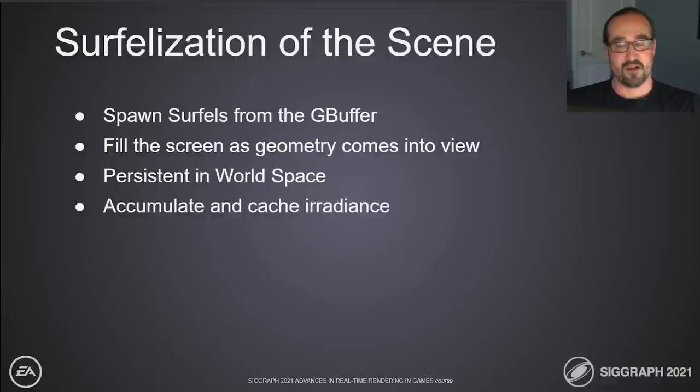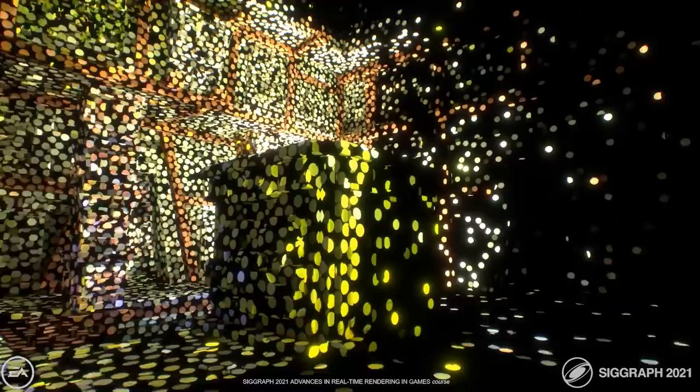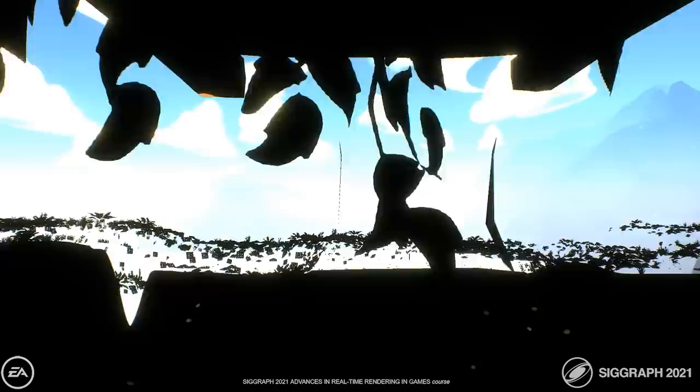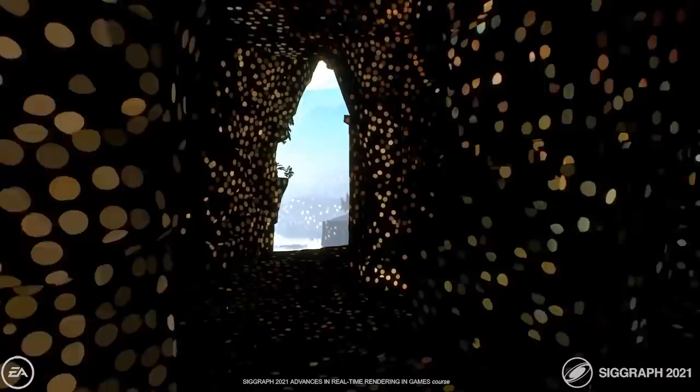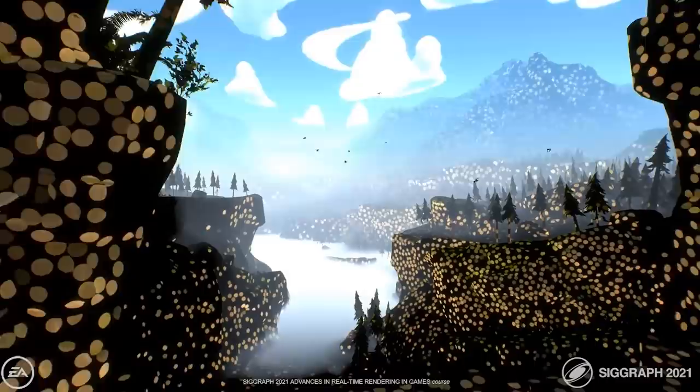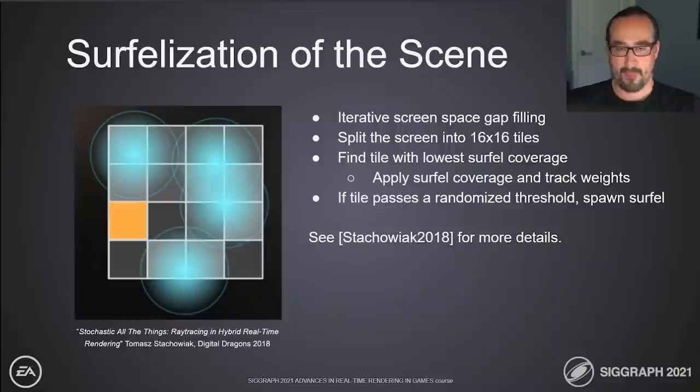How do we discretize the scene into surfels? In our case, we spawn them from the G-buffer as geometry comes into view. After that, surfels are persistent, which allows us to efficiently accumulate radiance over time and cache those costly operations without throwing the work away. Here we've slowed down the surfalization of the G-buffer so you can see it happen in real time. As geometry comes into view, the spawning algorithm fills any gaps in coverage that appear. Normally this is fast enough to appear immediate to the user — you never really see any gaps in the coverage.